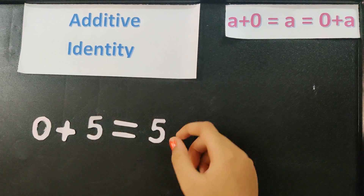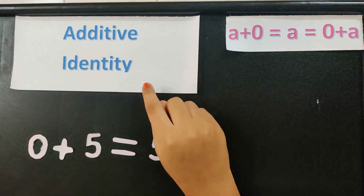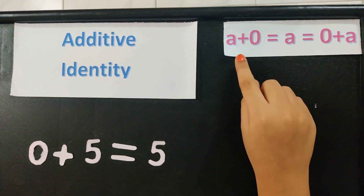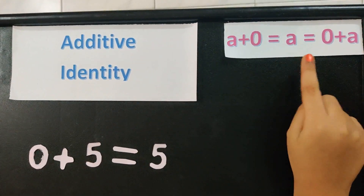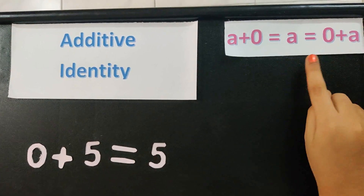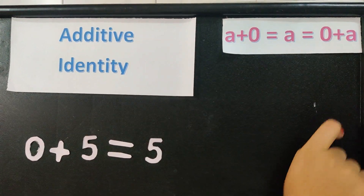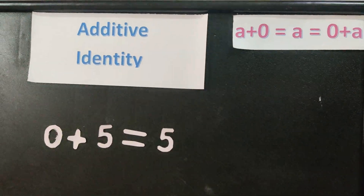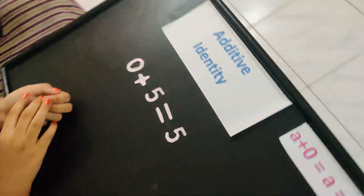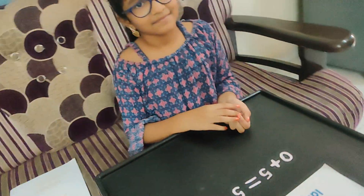Generally, additive identity is: A plus 0 is equal to A, and 0 plus A is equal to A, where A is a number. Hope you understood the concept. Thank you friends!